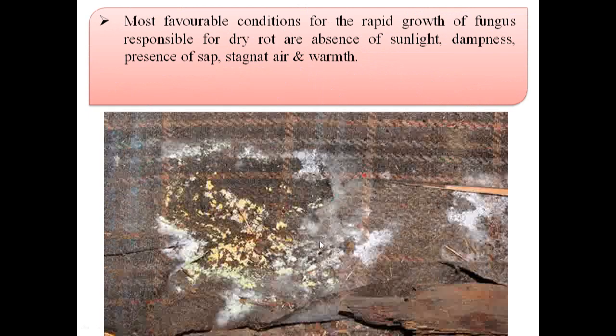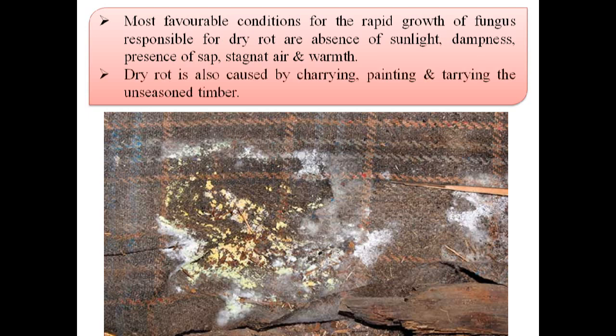Most favourable conditions for the rapid growth of fungus responsible for dry rot are absence of sunlight, dampness, presence of sap, stagnant air and warmth. Dry rot is also caused by charring, painting and tearing the unseasoned timber.